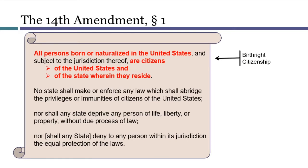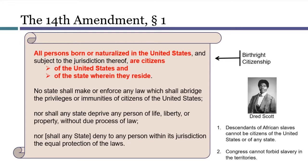Section 1 is the main rights-creating portion of the 14th Amendment. Its first sentence declares that all persons born or naturalized in the U.S. are both United States citizens and state citizens. The answer to why state citizenship is mentioned lies in the Dred Scott decision. The first of that decision's two holdings was that African slaves and all their descendants were not U.S. citizens and not citizens of states, as that term was used in the diversity of citizenship clause of Article 3. The Birthright Citizenship Clause put the last nail into the coffin of the Dred Scott decision.